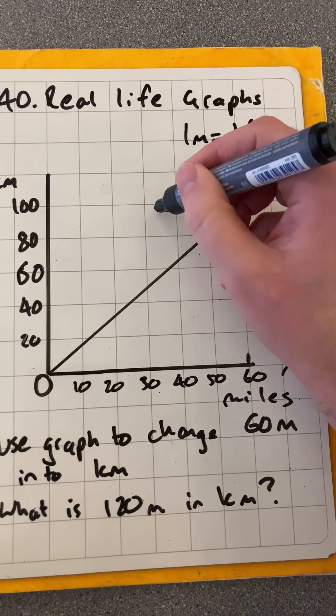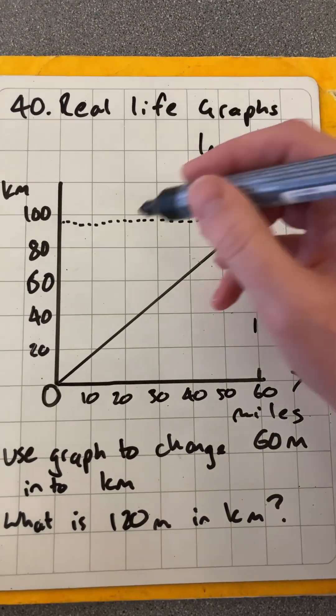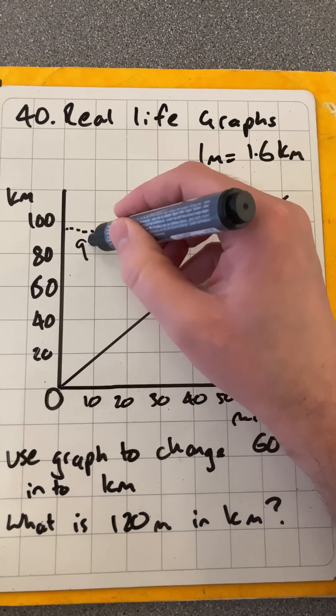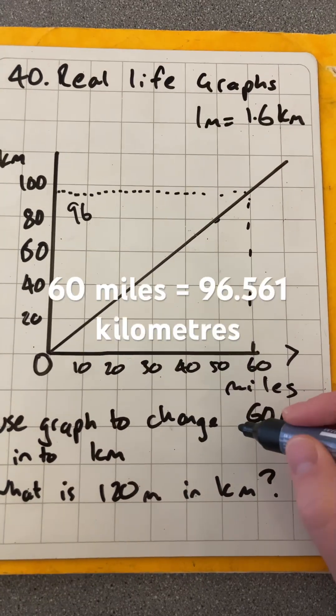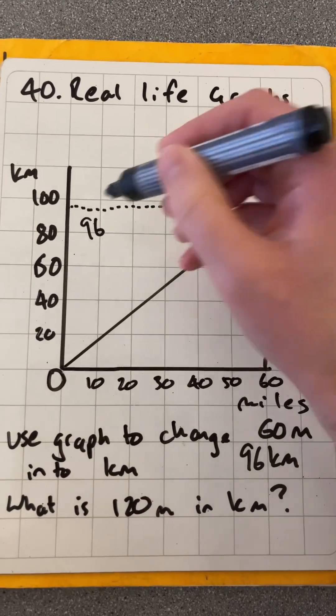and it's just below the line for 100. And if I were to read across using a ruler or proper grids, I would get to roughly 96 kilometers there. So I'm going to write 96 kilometers there and do use a ruler.